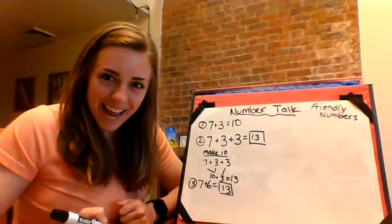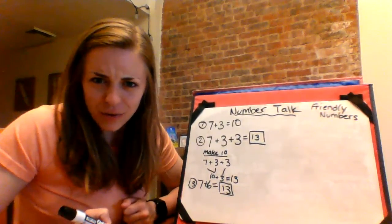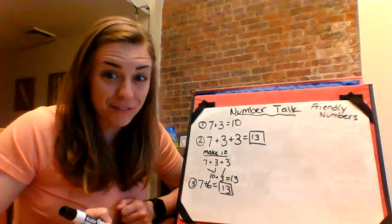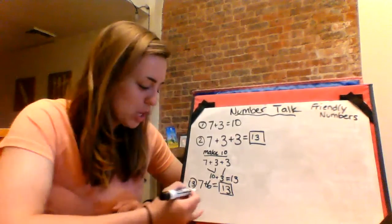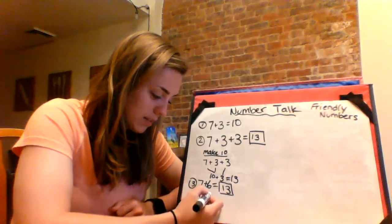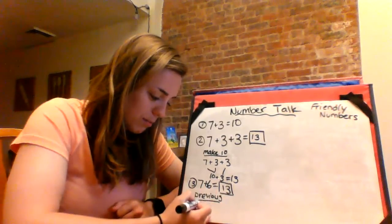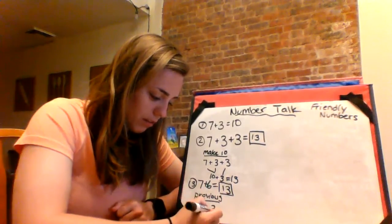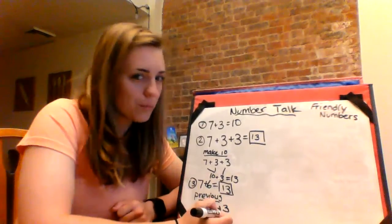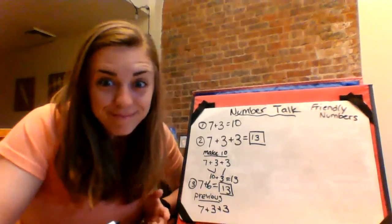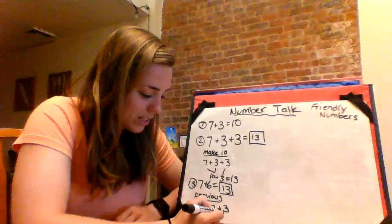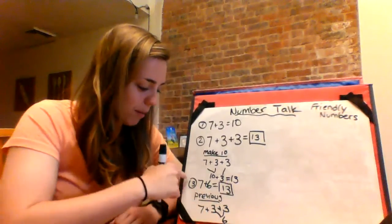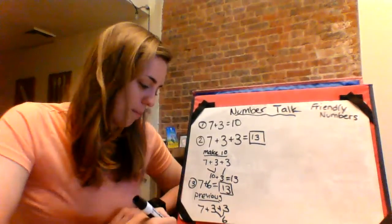Thirteen again. How did you guys get that so quickly? Did you use the previous one? We could have used the previous one because the previous one was seven plus three plus three. What's three plus three? Six. So it was the same problem. Two and three were the same problem.